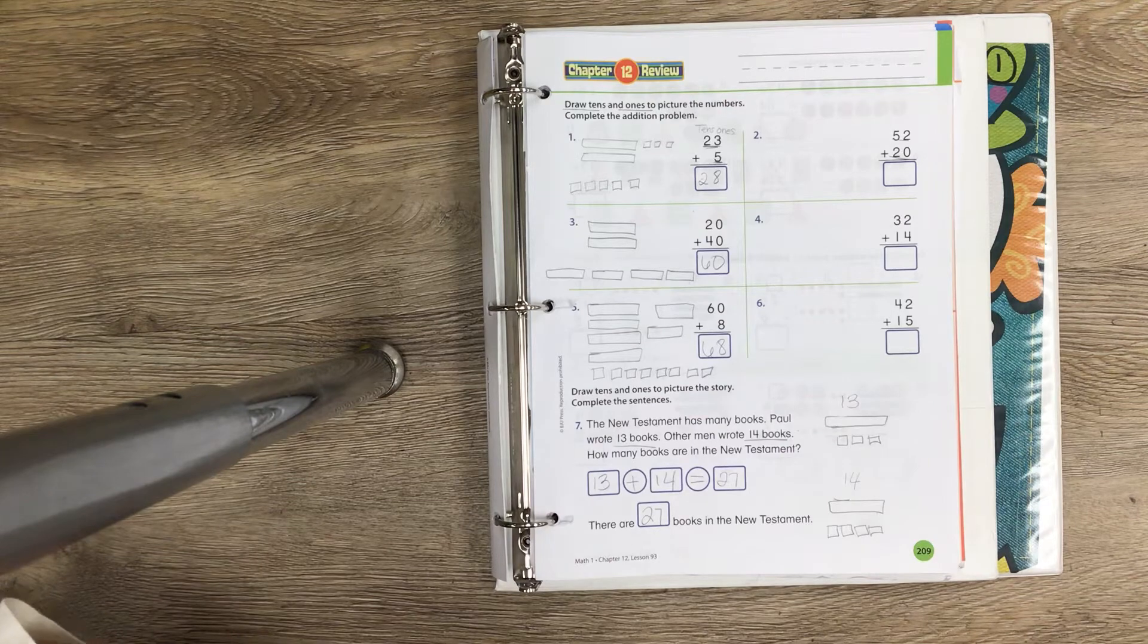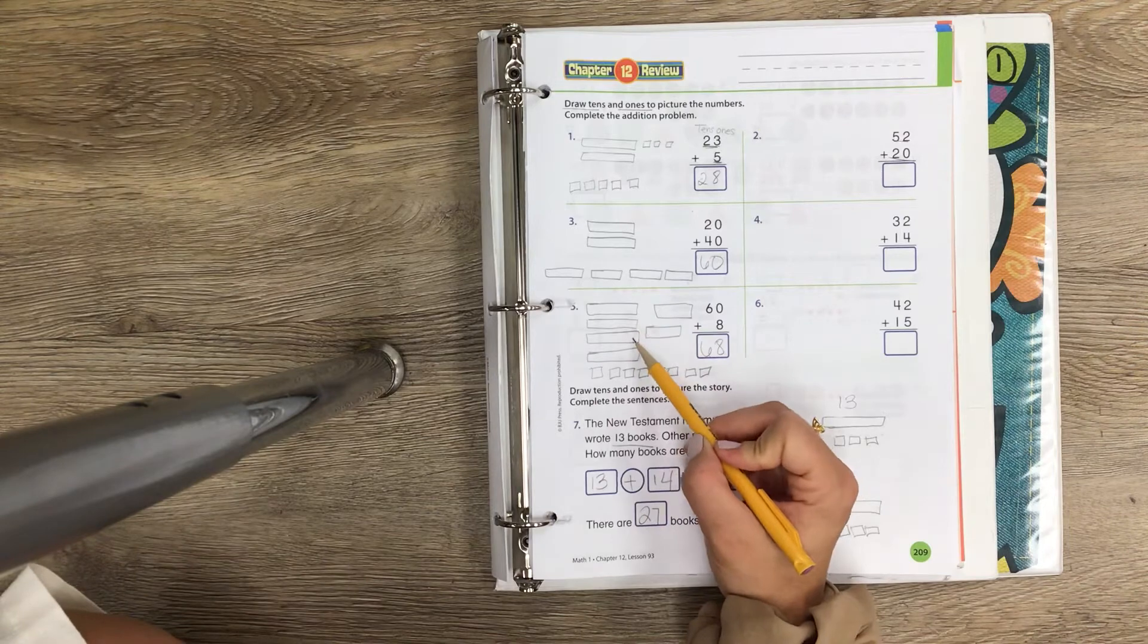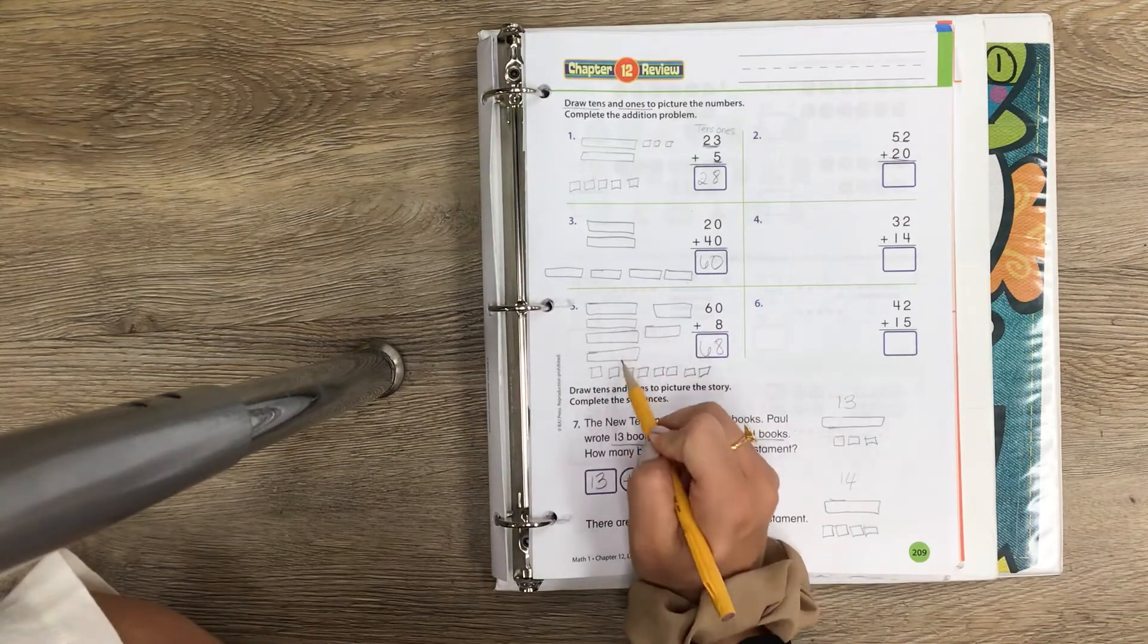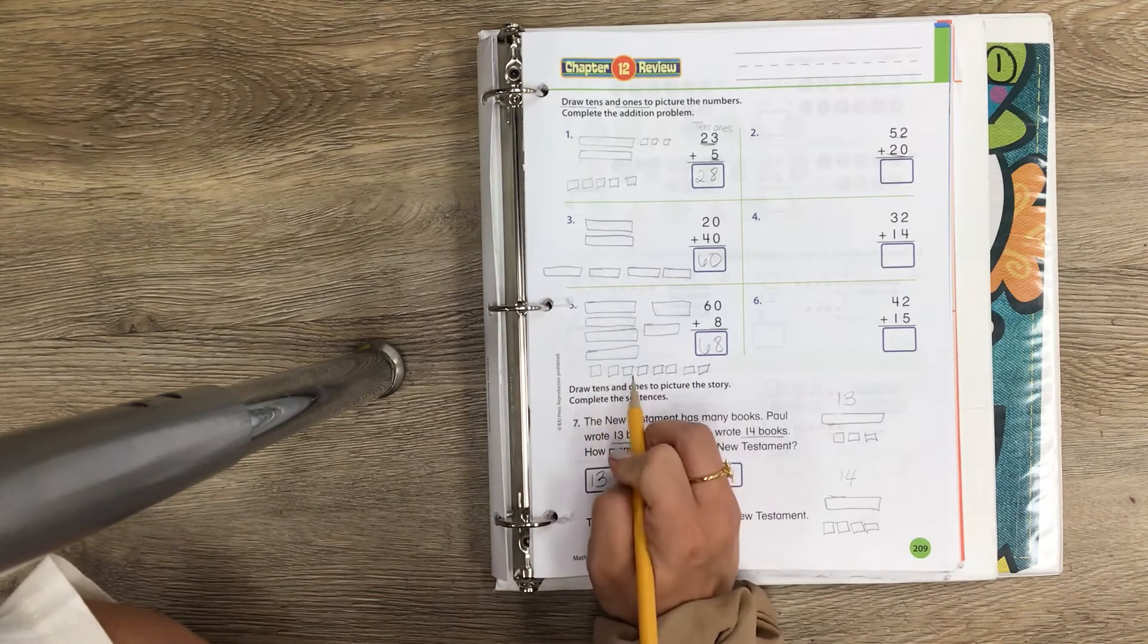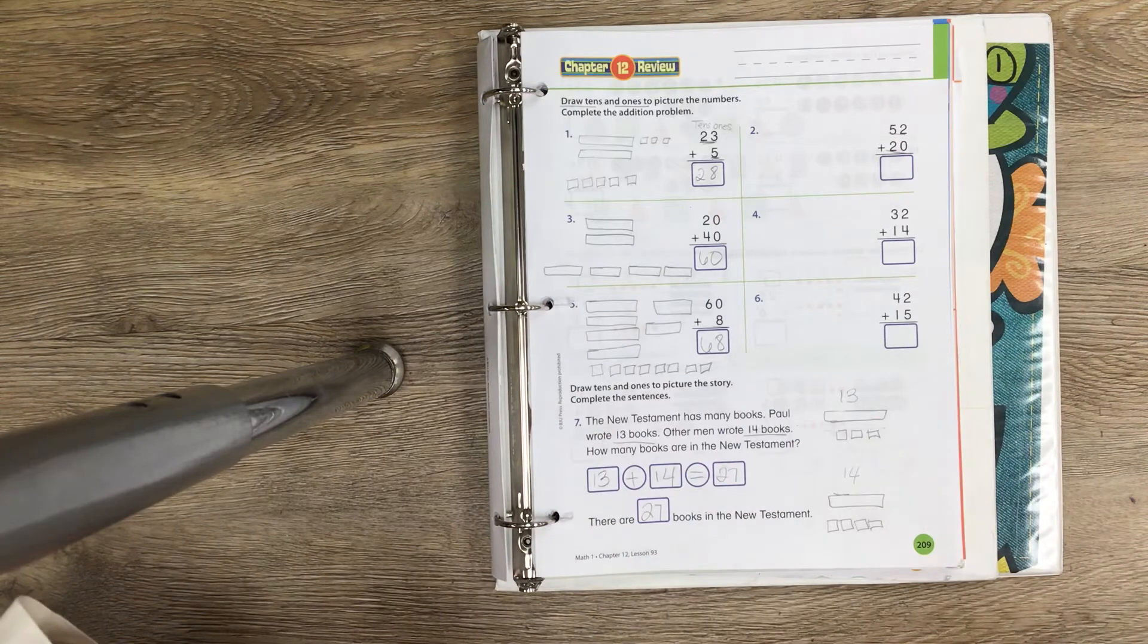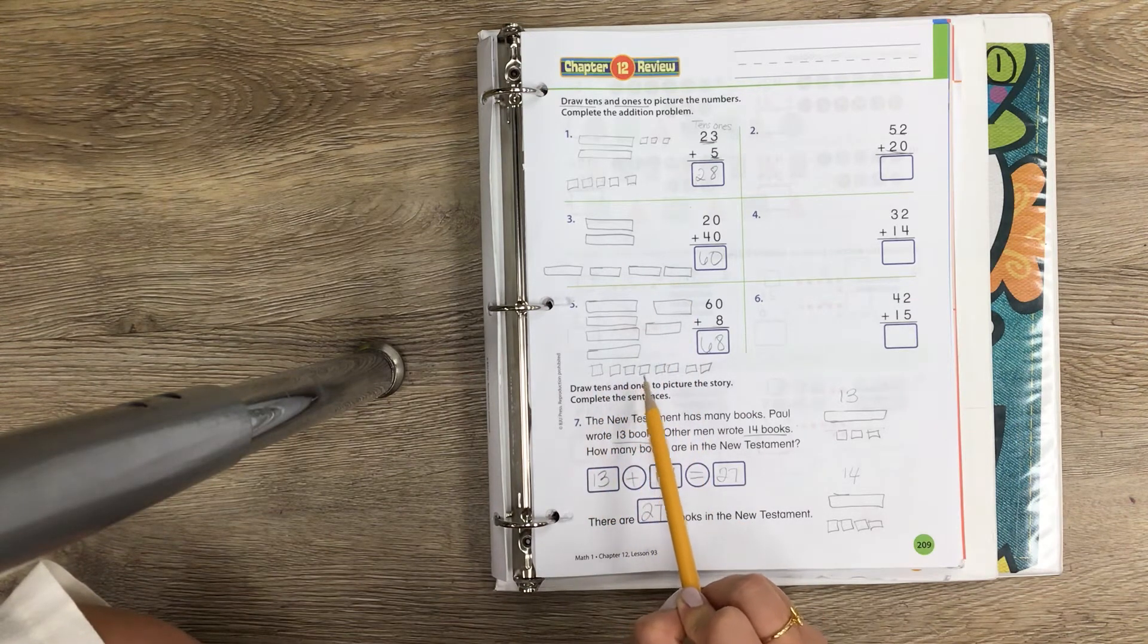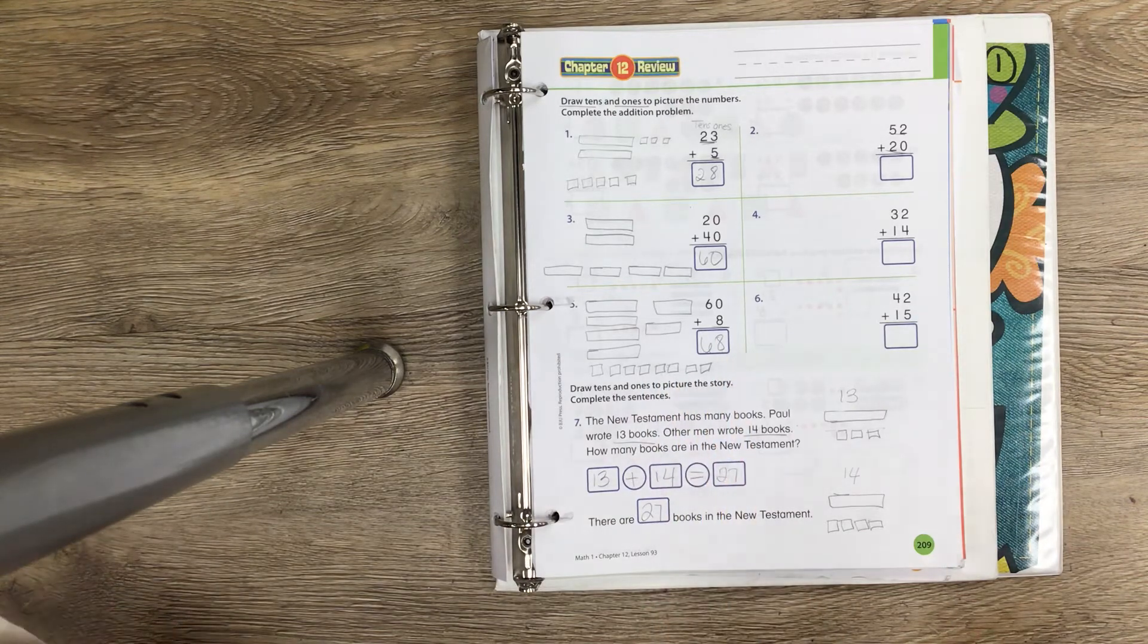For number 5, I made 60: 10, 20, 30, 40, 50, 60. I drew six of these tens bars. Then they wanted us to make 8, which was 1, 2, 3, 4, 5, 6, 7, 8. They wanted us to put it all together and we get 10, 20, 30, 40, 50, 60, 61, 62, 63, 64, 65, 66, 67, 68.